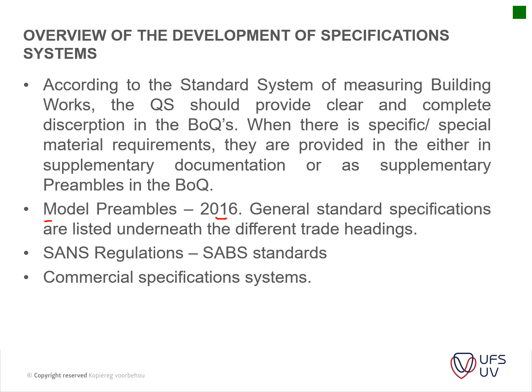The model preambles have now been replaced by the 2016 ASAQS model preambles. These are general standard specifications used to support any bills of quantities or drawings developed by architects. For instance, if you do not specify what type of mortar is to be used in a brick wall, it will be deemed to be a Class 2 type of mortar. Anything additional to that standard will be specified in the BOQ or supplementary preambles.